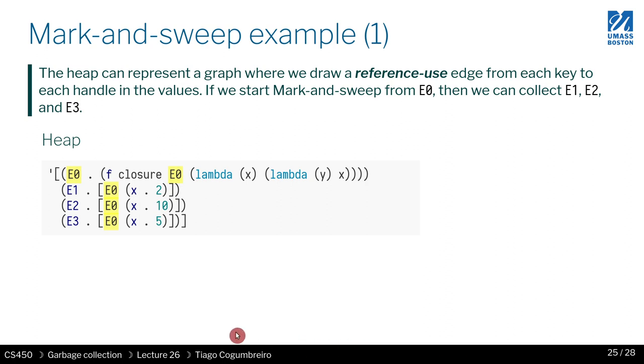So now let's look at our example. And if we start from E0, we go to the frame and then from the frame, we look at all the references that can be mentioned here. There's a single closure, which means from E0, I go back to E0, but E0, I've already visited, which means our search ends here.